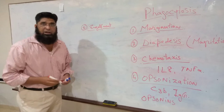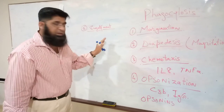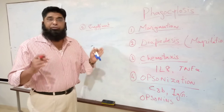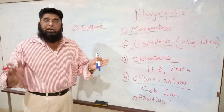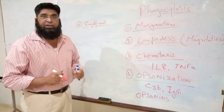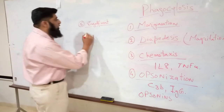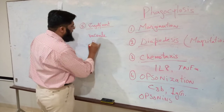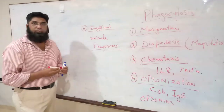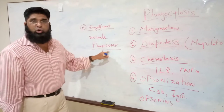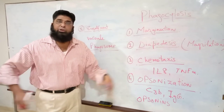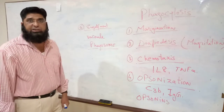Stage five: Engulfment. Once the foreign antigen becomes attached with the phagocytic cells, the phagocytic cells draw cytoplasmic projections around the foreign antigen. As a result, they form a vacuole which is called a phagosome. A phagosome is the foreign antigen surrounded by the cytoplasm of the phagocytic cell.